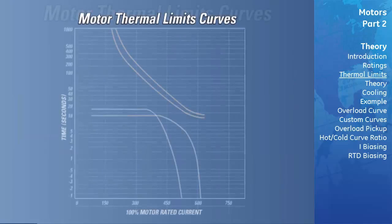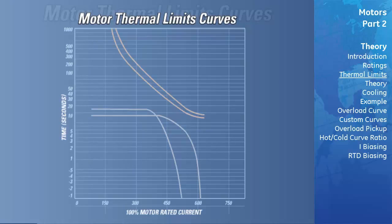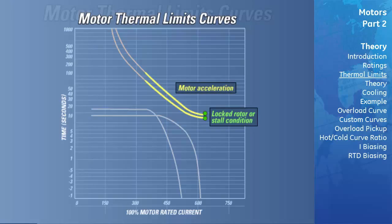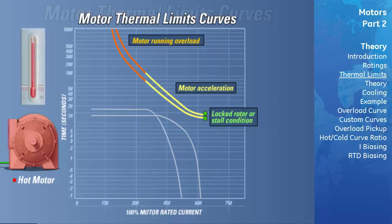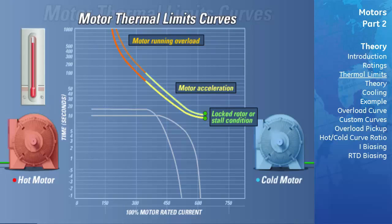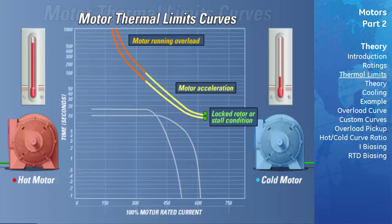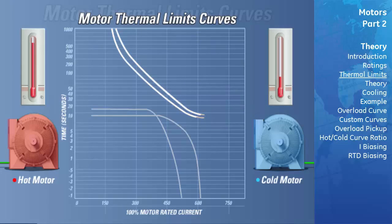Motor Thermal Limits Curves. The motor thermal limits curves consist of three distinct segments based on three running conditions of the motor: the locked rotor or stall condition, motor acceleration, and motor running overload. Ideally, curves have been provided for both a hot and cold motor. A hot motor has been running at full load such that stator and rotor temperatures have settled at their rated temperatures. A cold motor has been stopped long enough that rotor and stator temperatures have settled at ambient temperature. For most motors, the motor thermal limits are formed into one smooth, homogeneous curve.